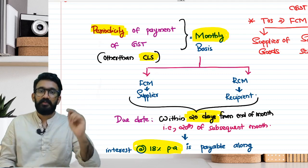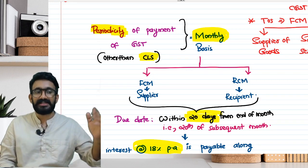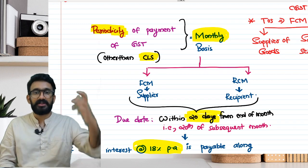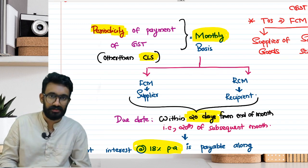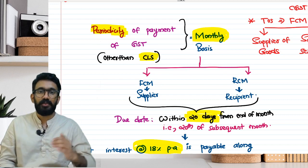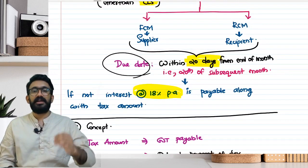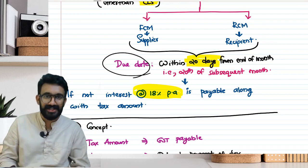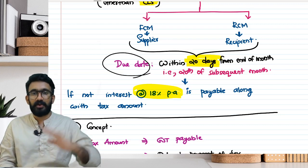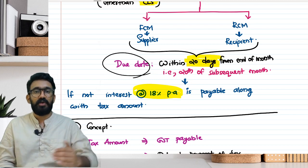To summarize: periodicity of payment of GST to government is on a monthly basis. Whether paid by supplier or recipient depends on the charge - forward charge means tax liability goes to supplier; reverse charge means tax liability goes to recipient. The due date of payment is on or before 20th of the subsequent month. So January GST is paid by 20th February, February GST by 20th March, and so on.